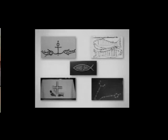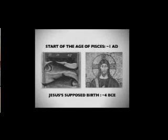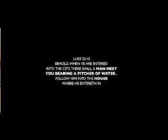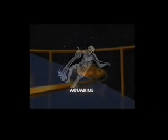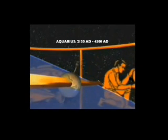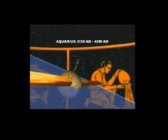At Luke 22:10, when Jesus is asked by his disciples where the next Passover will be after he is gone, Jesus replies: 'Behold, when ye are entered into the city there shall a man meet you bearing a pitcher of water — follow him into the house where he entereth.' This scripture is one of the most revealing astrological references. The man bearing a pitcher of water is Aquarius the water bearer, who represents the age after Pisces. When the sun — God's Son — leaves the age of Pisces, it will go into the house of Aquarius, as Aquarius follows Pisces in the precession of the equinoxes.